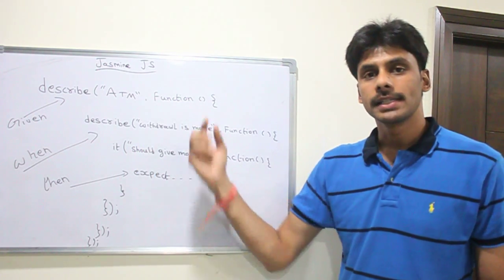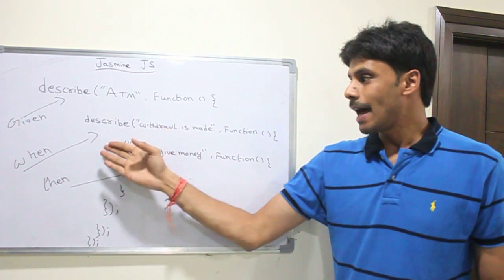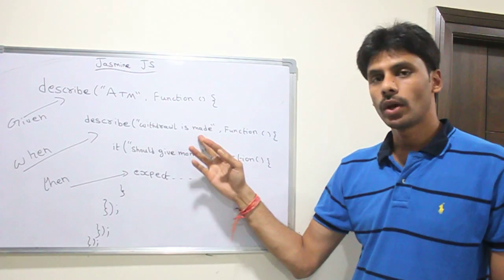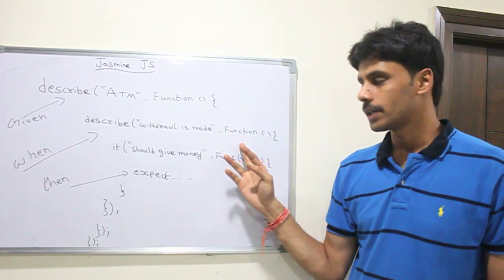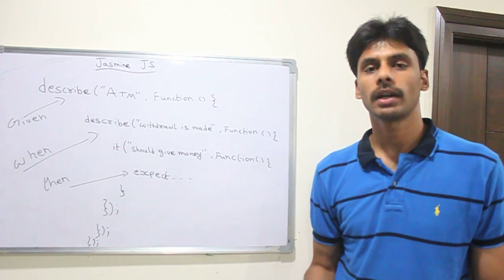The second parameter is a function. Within this function, we can have another describe block. And I'm saying when a withdrawal is made, again, the second parameter is a function within which I have an it block. That is where we actually write our test.